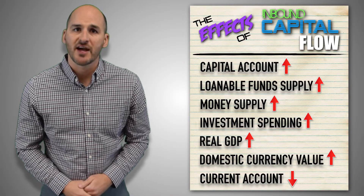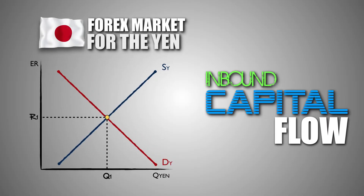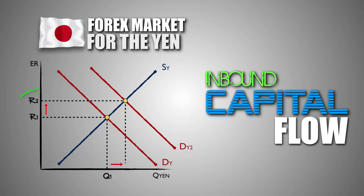Let's walk through the effects of inbound capital flow, one graph at a time. Let's say Japan is experiencing inbound capital flow. As foreign investors purchase Japanese assets, those assets must be bought in domestic currency, which will cause changes in the forex market for the Japanese yen. As international investors purchase Japanese assets in greater quantities, they are required to convert their currency into yen in the foreign exchange market. This will increase the demand for yen, causing the exchange rate to increase and causing the yen to appreciate in value.